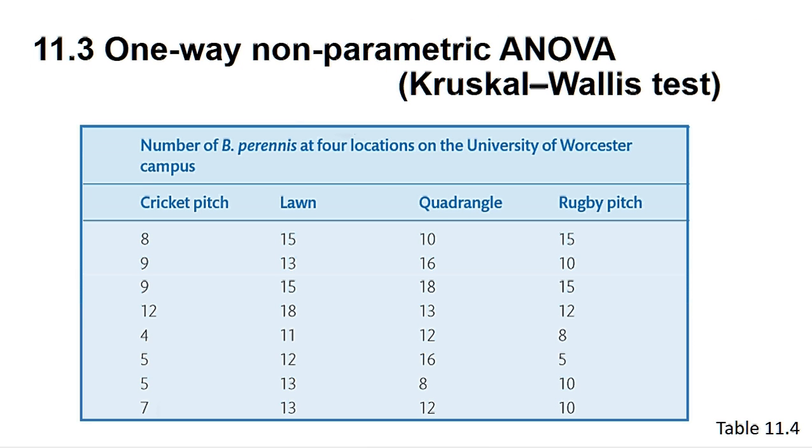In the example we're using here, eight quadrats were sampled for the number of daisy plants growing in four distinct grassed areas with different uses at the University of Worcester. These areas were the cricket pitch, the lawn, the quadrangle and the rugby pitch. The data can be found in table 11.4.